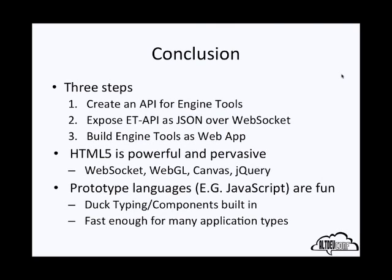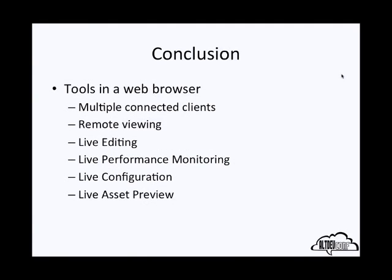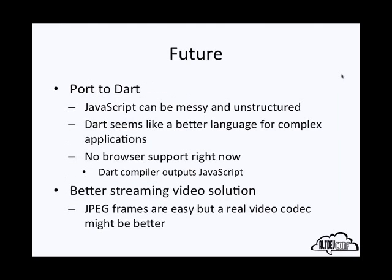The tools I've been talking about moving into a web browser should support multiple connected clients, remote viewing, live editing, live performance monitoring, live configuration, and live asset preview. Some future work I'd like to do: first, a port to Dart — JavaScript can be kind of messy and unstructured, which has its benefits, but as an application grows it can be unwieldy, and Dart seems like a better language for complex applications. The Dart compiler currently outputs JavaScript. I'd also like to investigate a better streaming video solution — the JPEG frame solution was easy and worked surprisingly well, but a real video codec might allow for streaming over the internet, not just over a local network.